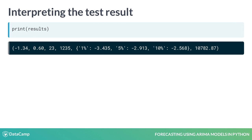The results object is a tuple. The zeroth element is the test statistic. In this case, it is minus 1.34. The more negative this number is, the more likely that the data is stationary.